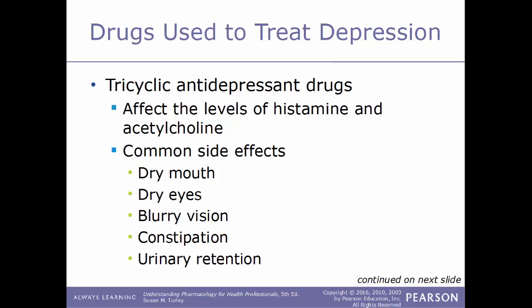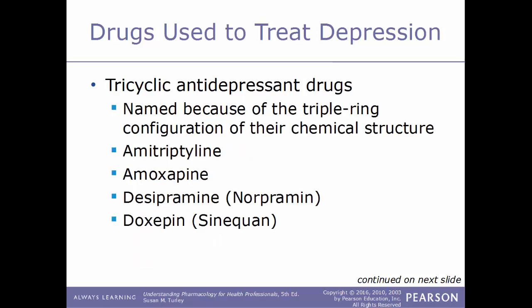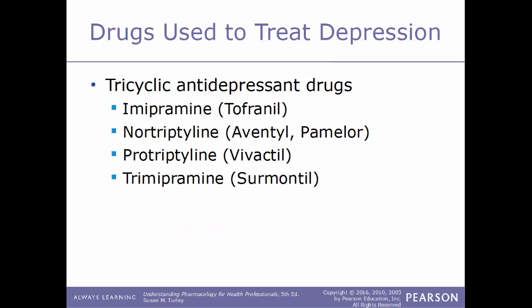Common side effects of tricyclic antidepressants include dry mouth, dry eyes, blurry vision, constipation, and urinary retention. This category gets its name from the triple ring configuration of its chemical structure. Examples include amitriptyline, amoxapine, desipramine (Norpramin), doxepin (Sinequan), imipramine (Tofranil), nortriptyline (Aventyl/Pamelor), protriptyline (Vivactyl), and trimipramine (Surmontil).